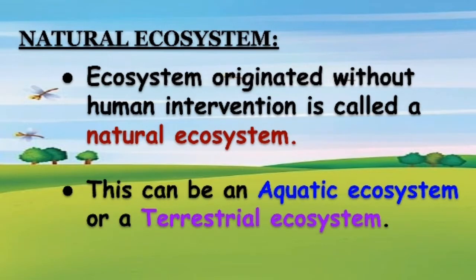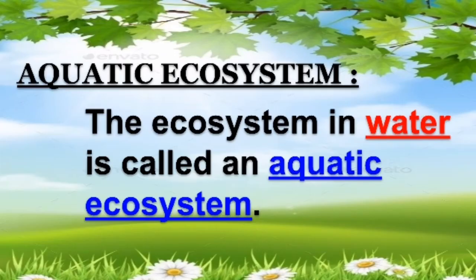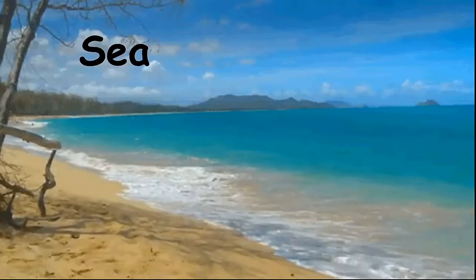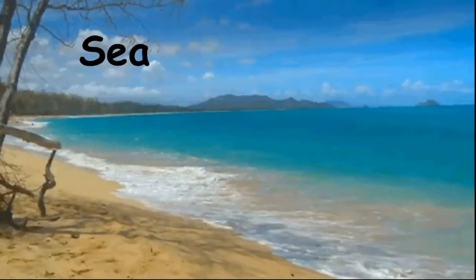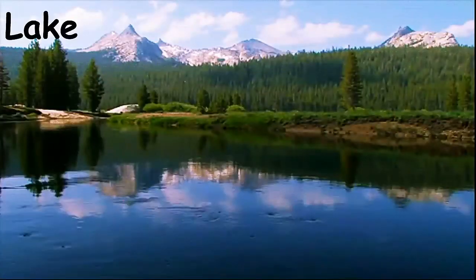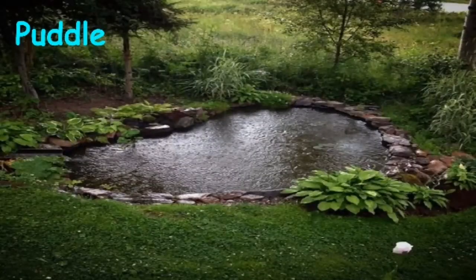Now let's see natural ecosystem. Ecosystem originated without human intervention is called a natural ecosystem. This can be an aquatic ecosystem or a terrestrial ecosystem. The ecosystem in water is called an aquatic ecosystem. Examples of aquatic ecosystem include sea, river, lake, pond and puddle.